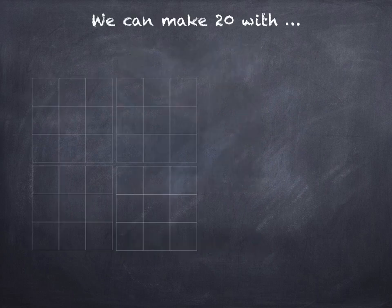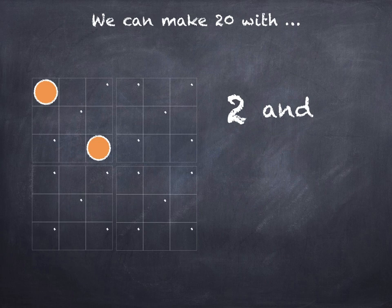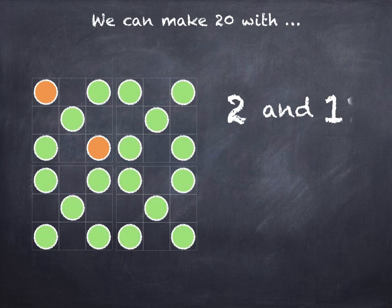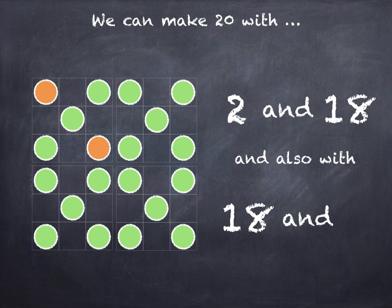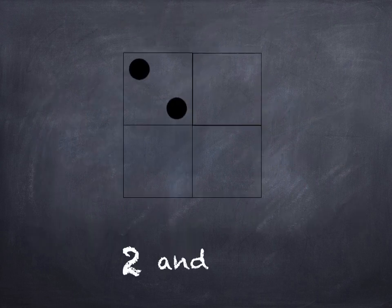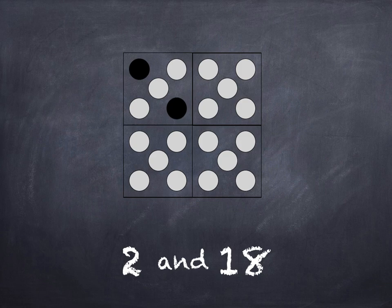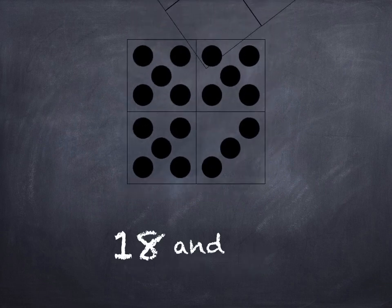We can make 20 with 2 and 18, and also with 18 and 2.